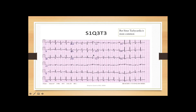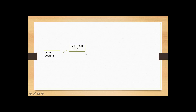Looking at the EKG, the typical S1Q3T3 pattern is a buzzword — whenever you see this you say it's a sign of PE. However, the key point is that sinus tachycardia is the most common finding on EKG in PE. Moving on, when a patient presents with acute onset of shortness of breath and chest pain, you must also think about pneumothorax.